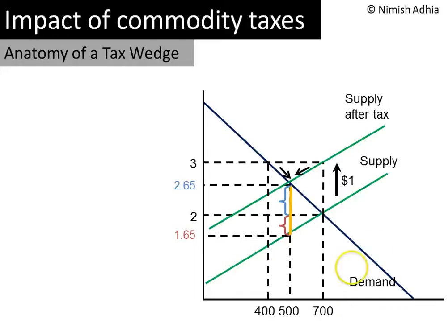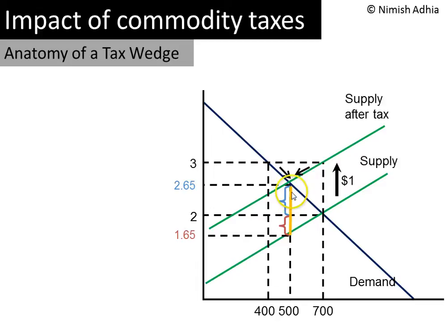In the last video I pointed out this yellow line segment to you. It's called the tax wedge. It is made up of these two line segments, one representing the consumer's burden of the tax and the other one representing the producer's burden of the tax. This tax wedge is a very important visual tool because just by looking at it, we can obtain a lot of information about the tax.